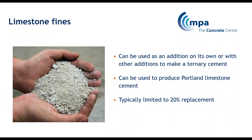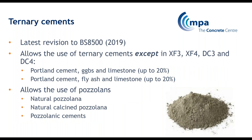Limestone fines are not a byproduct but limestone ground to a fine powder. They can be used as a sole addition or combined with other additions, typically at about 20% replacement. If you use limestone fines with other additions you make a ternary cement — for example, Portland cement with GGBS and limestone, or Portland cement with fly ash and limestone. These are now included in BS 8500; the latest 2019 edition includes them, though they are disallowed for some exposure classes such as higher sulphate levels in the ground or freeze-thaw, although work is ongoing to see whether this limit can be relaxed.